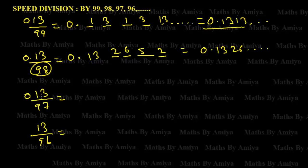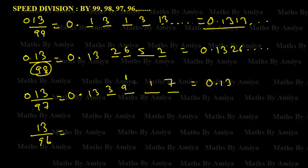For 13 divided by 97: looking for the third digit gives 0.13. The gap between 100 and 97 is 3, so multiply by 3: 13 × 3 = 39, then 39 × 3 = 117, so write 17 and carry 1, giving 39 + 1 = 40. The result is 0.1340... and so on.